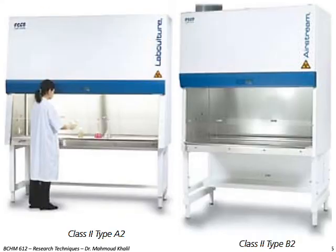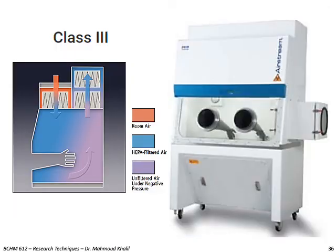Here you can see a picture of a class 2 type A2 cabinet and the class 2 type B2 cabinet. You can also see a picture of a class 3 cabinet. Notice that there are three HEPA filters — two for the exhaust and one for the intake air. The operator is using built-in gloves for working inside the hood.